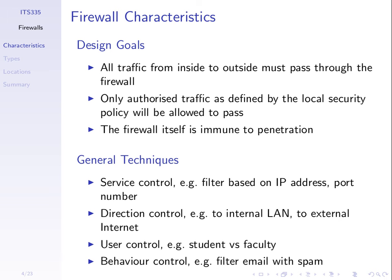The firewall may also look at the content of the data — behaviour control. For example, an email comes into our internal network via the firewall. The firewall looks at that email destined to Steve at SIT, and before it reaches the inbox, the firewall does a scan for spam messages or viruses. If detected, it either blocks that email or removes the malicious content before forwarding it on. So based on behaviour or content, we may make decisions.